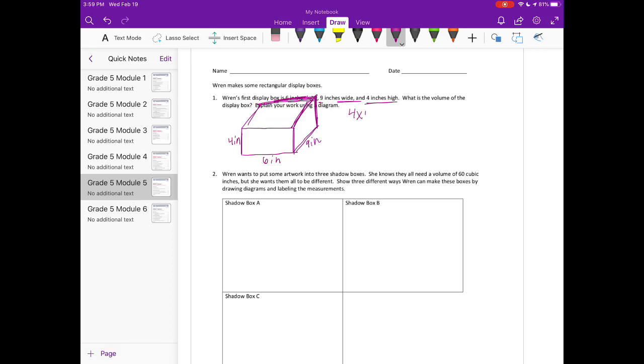And then let's find the volume. We have 4 times 6 equals 24. And we need to do 24 times 9, because it would be 4 times 6 by 9. 4 times 9 is 36, carry the 3. 9 times 2 is 18, plus 3 is 21. So we get 216 inches cubed.